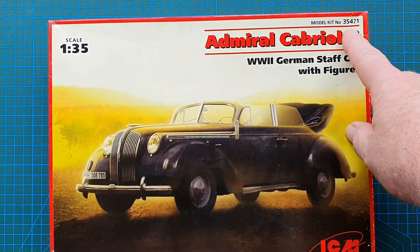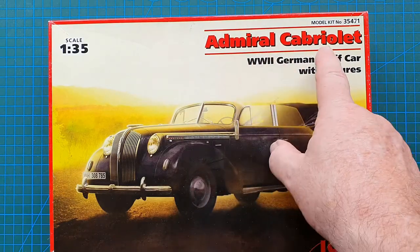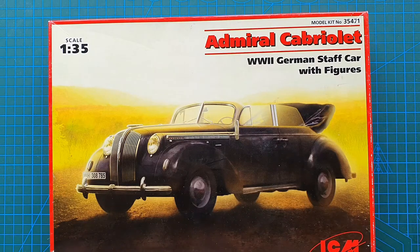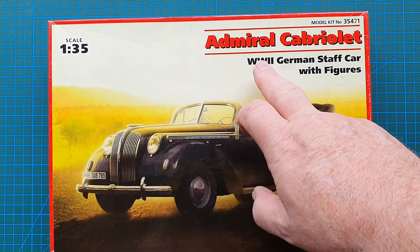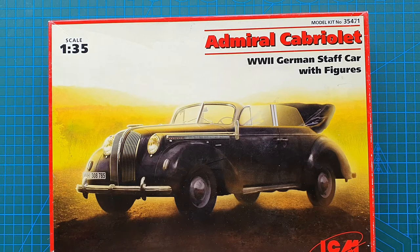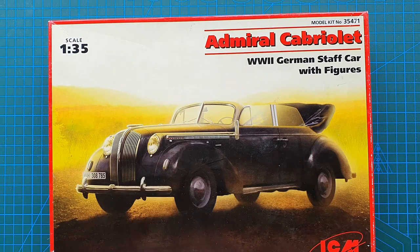So today we're going to be looking at a kit from ICM in 1:35th scale. The kit number is 35471. It is ICM's Admiral Cabriolet, World War II German staff car with figures. Admiral is actually nothing to do with Navy ranks. It is actually the maker name for this particular car.